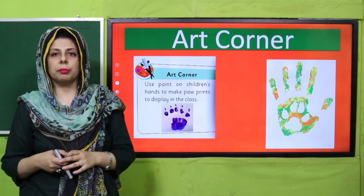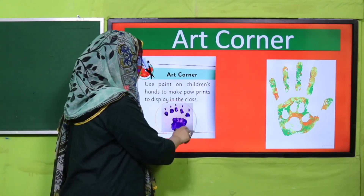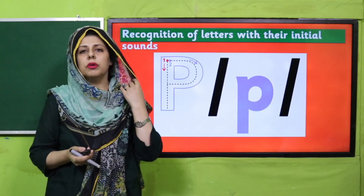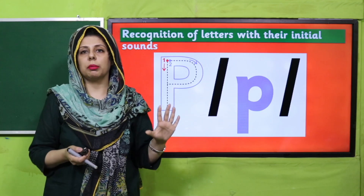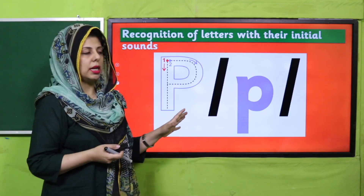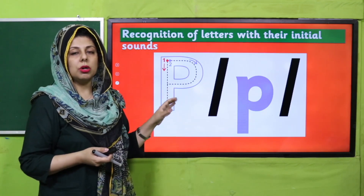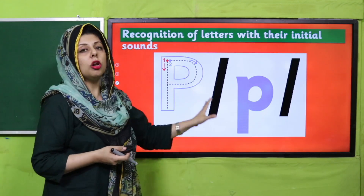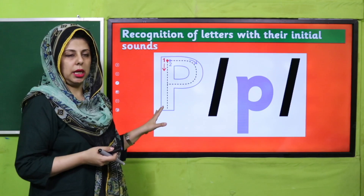So aapko yaad rahega kiya aapne kaun se sound ki thi. Teachers, this activity is suggested here in the textbook, ye bhi aap bachon se karva sakte hain. Bachon, aaj ke letter ka kya naam hai — P. This is the capital letter P, aur is ki sound hai P. And capital P aur small P, ya baby P, bhi aise hi likhte hain jaise capital likhte hain.